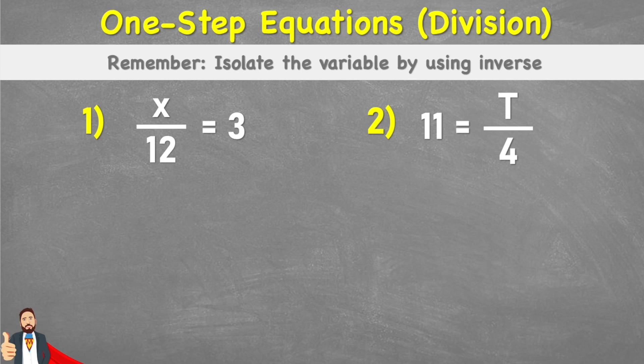Okay, so the first thing we need to understand when solving a one-step equation is that we want to isolate the variable by using the inverse. So first of all, what is the variable? Well, the variable is this little value represented by a letter where the value is unknown. So we need to try and get it on its own.